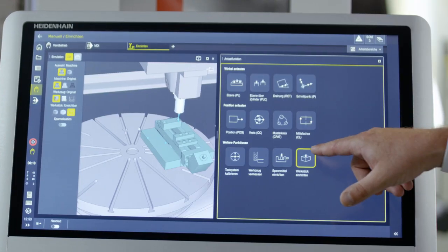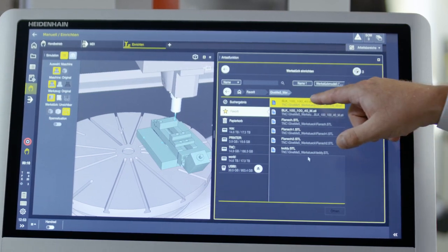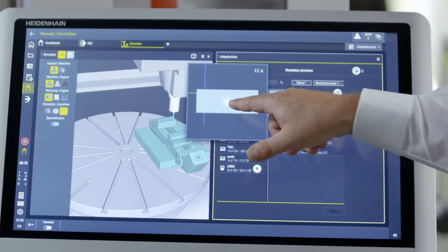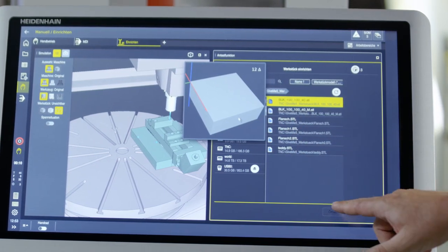So, let's take a look at it right here in the control. Under the probing functions I see workpiece setup, and I can then choose my 3D model. A quick check of the preview to make sure it's correct, and then open it.